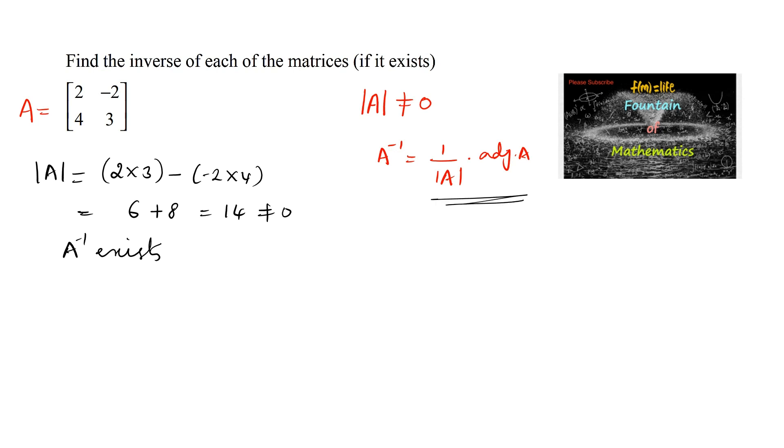Let's find the adjoint of the matrix. We know that for any matrix A equals [a, b; c, d], the adjoint of matrix A equals, by interchanging the diagonal elements a and d, we can write d and a.